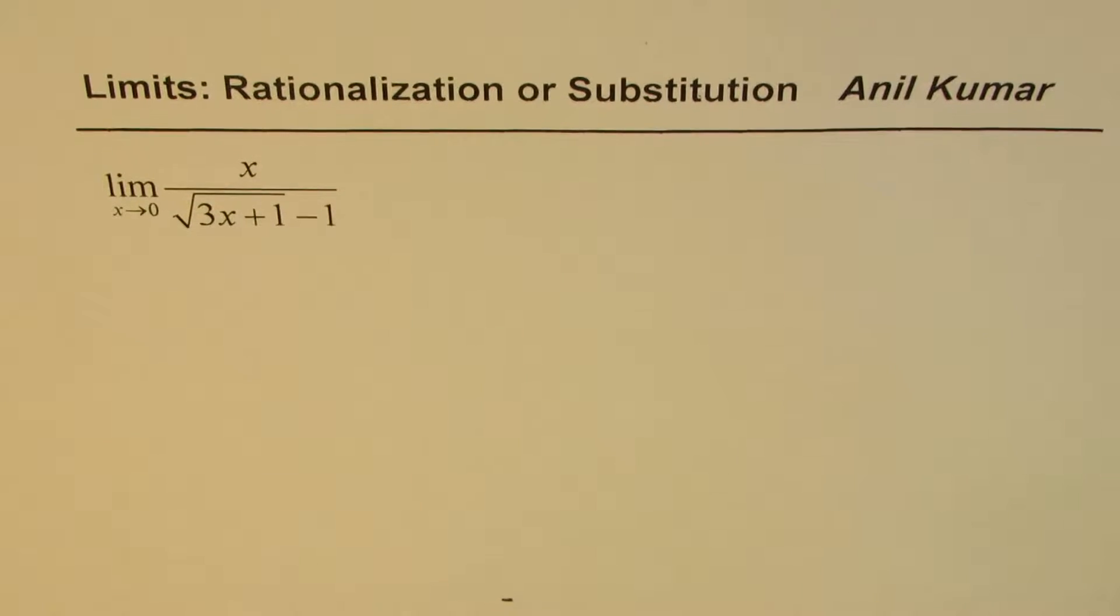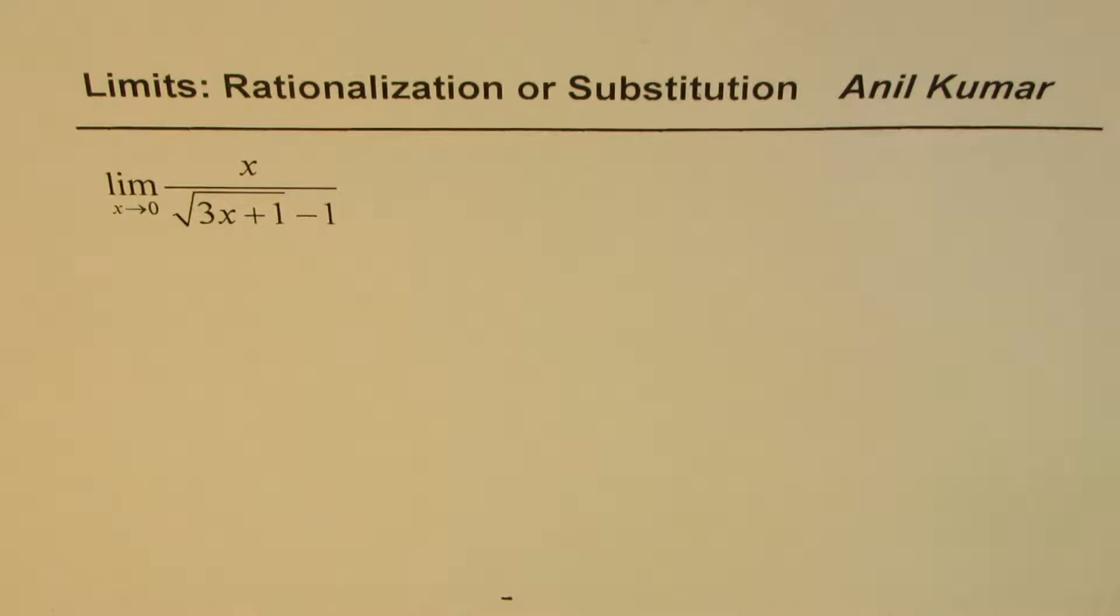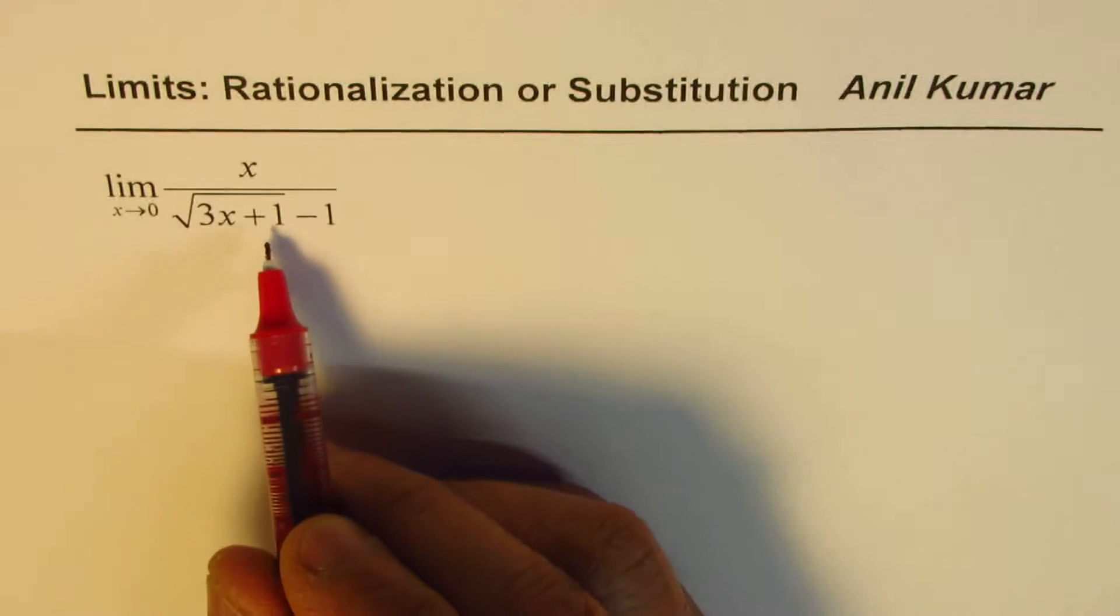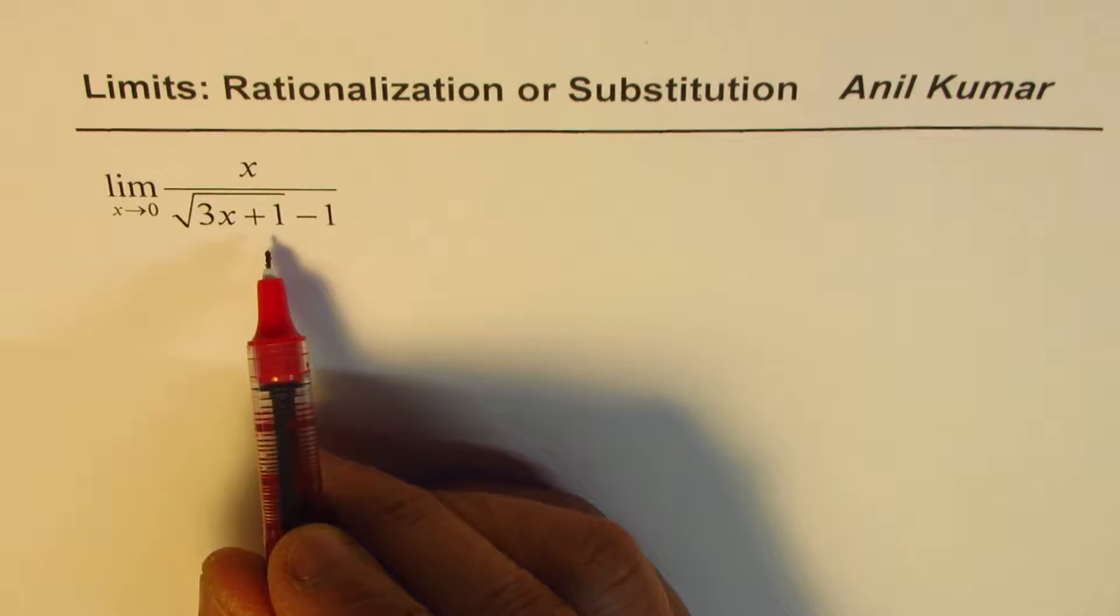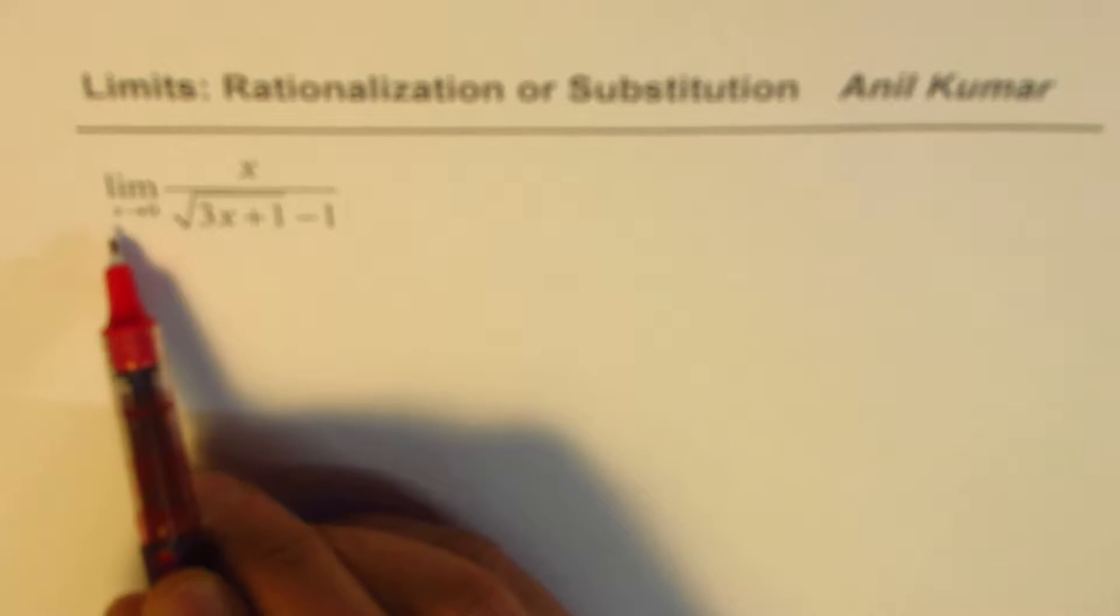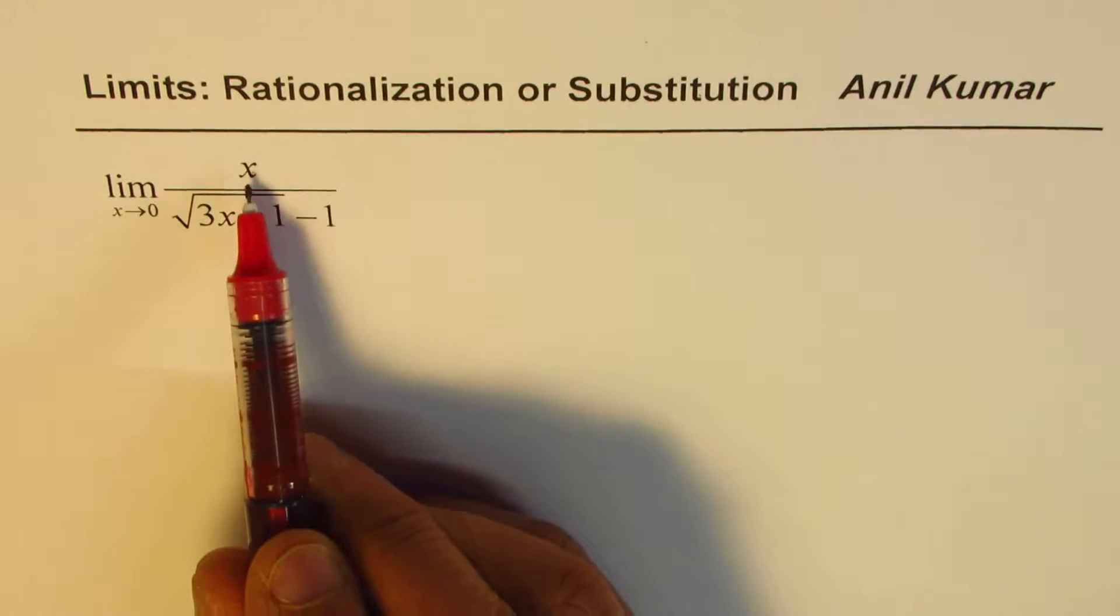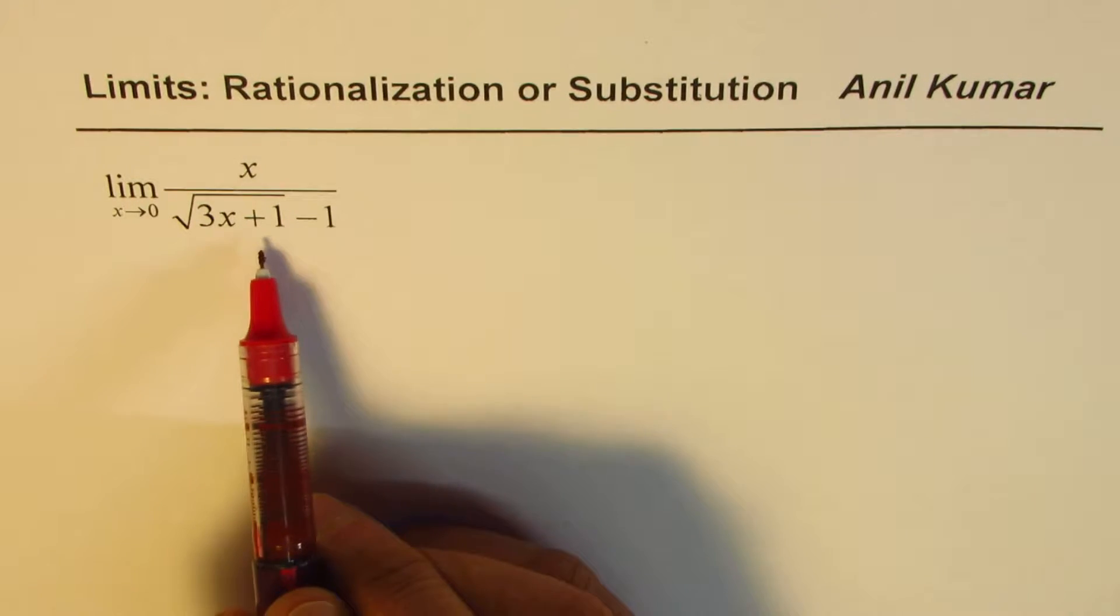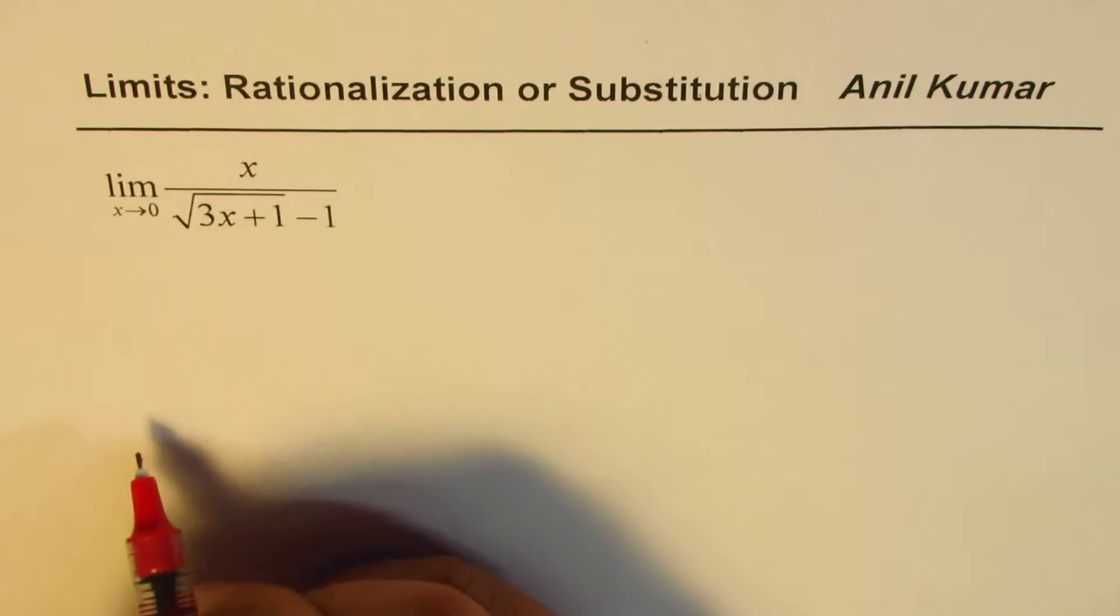I am Anil Kumar and in this video I am going to discuss with you in detail how to find limits of functions which may have a square root part of the function also. So the question here is find limit when x approaches 0 of x divided by square root of 3x plus 1 minus 1.